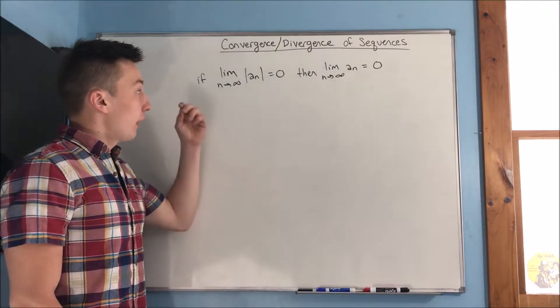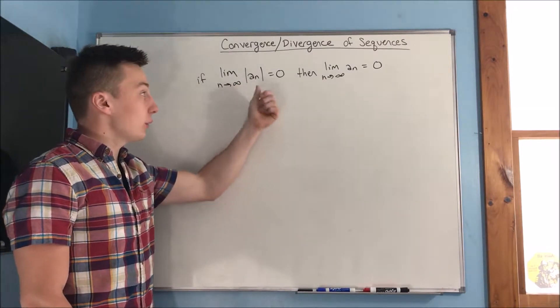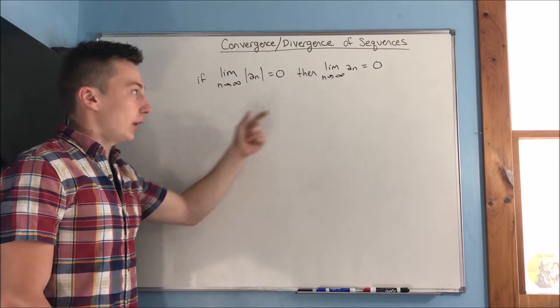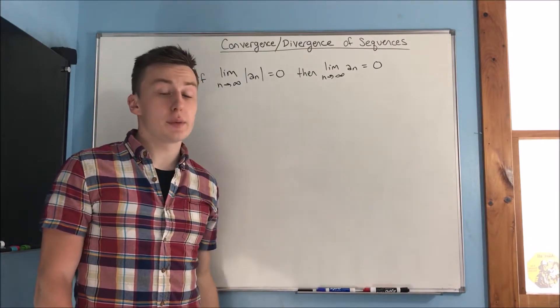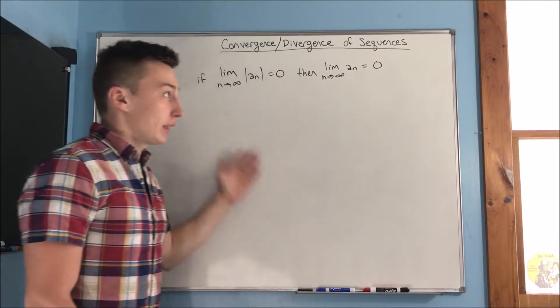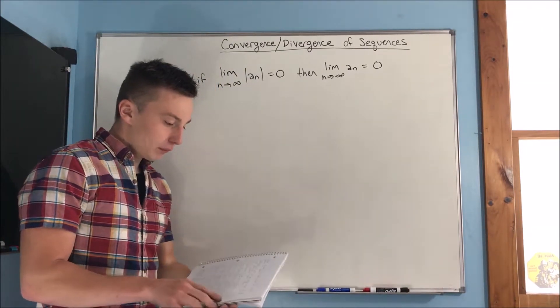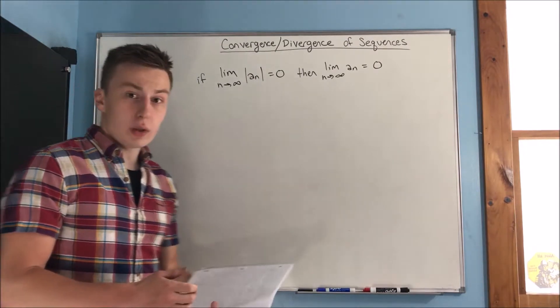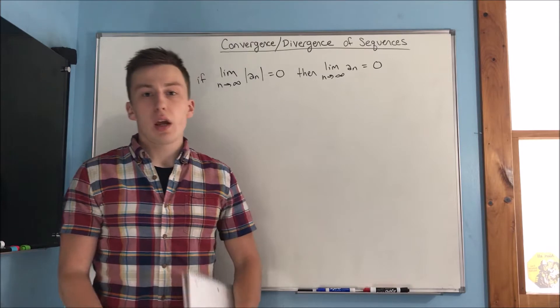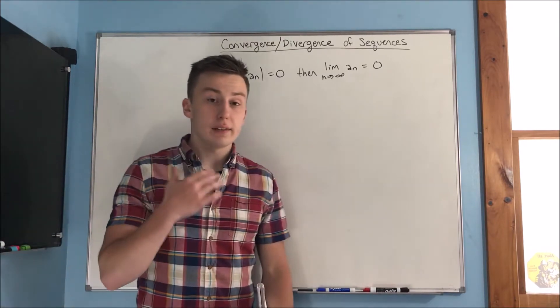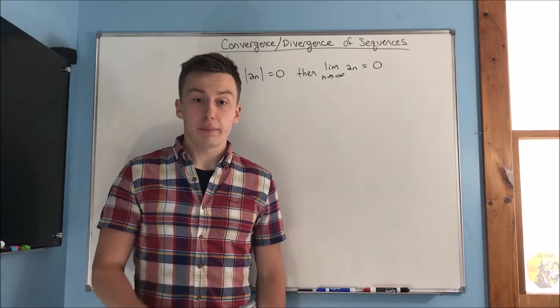Lastly, if you can prove that the limit as n approaches infinity of the absolute value of your sequence equals zero, well, then the limit as n approaches infinity of your sequence is just going to equal zero. That's a little thing there that might come in handy. So now you should be ready to be able to do the example problems for this, just proving whether a sequence converges or diverges, and that's going to be in the next couple videos, so I will see you then.